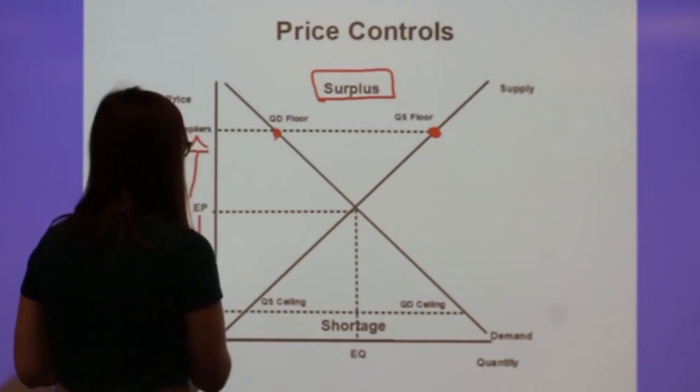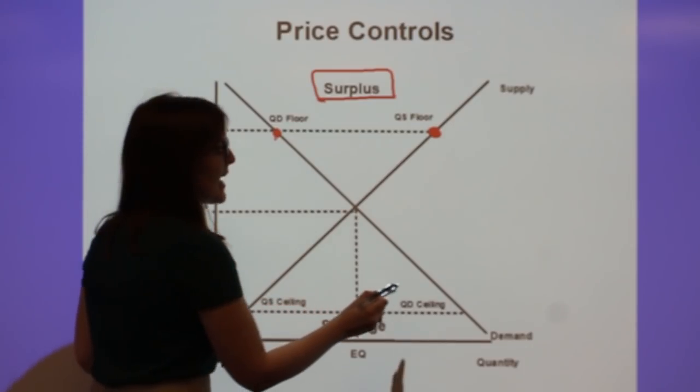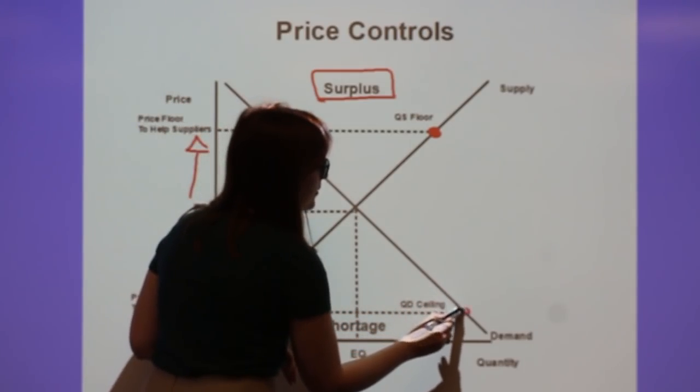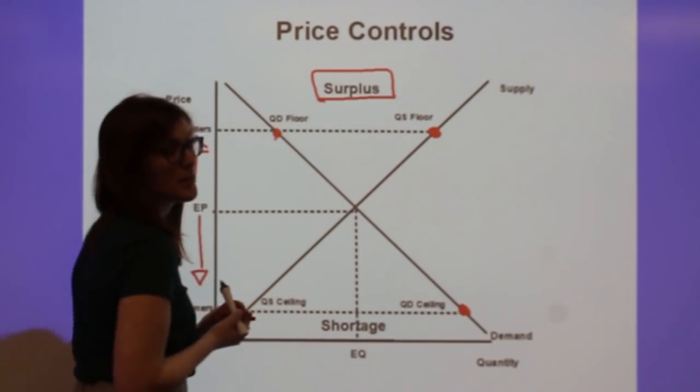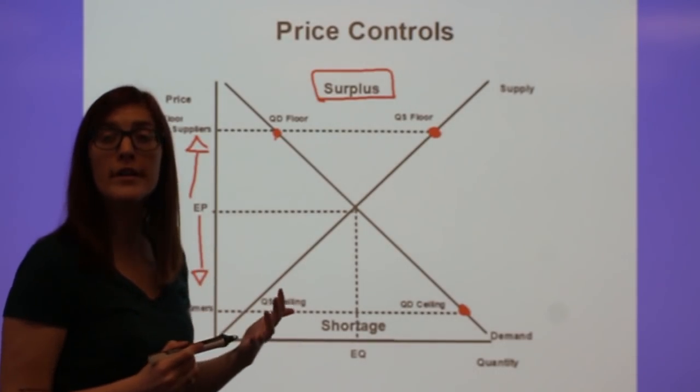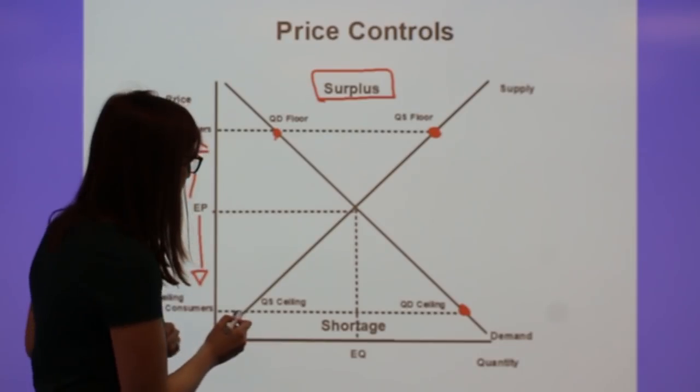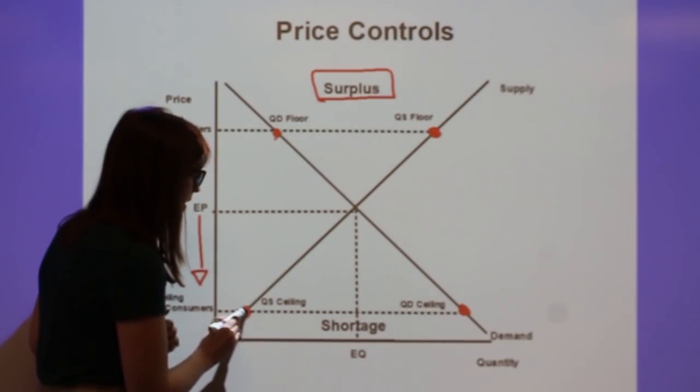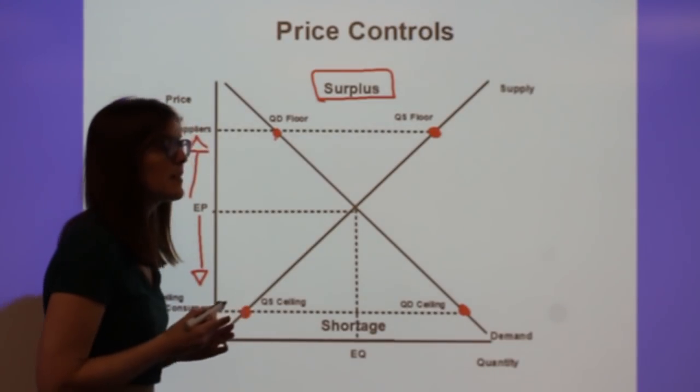If prices were to decrease, again we move down along the line, but now to show that consumers want to buy a larger quantity because the price is low, diminishing marginal utility. I'm only willing to buy a large quantity if the price is super low, but now producers don't want to sell as much quantity at that lower price, so quantity supply falls.